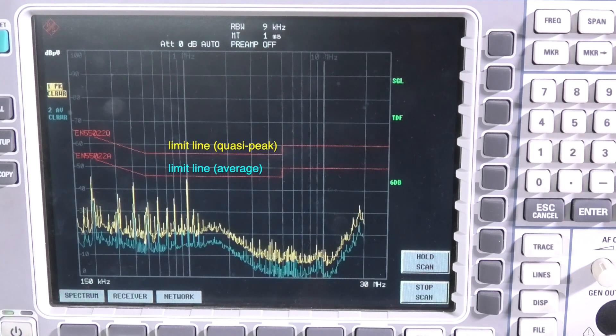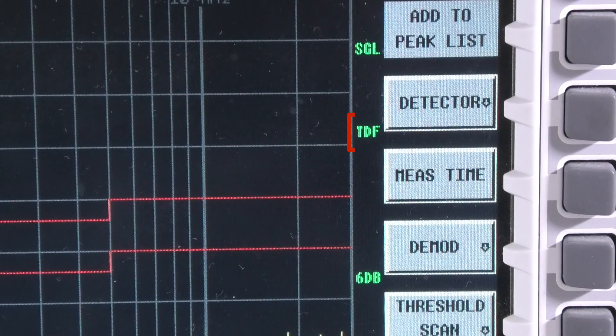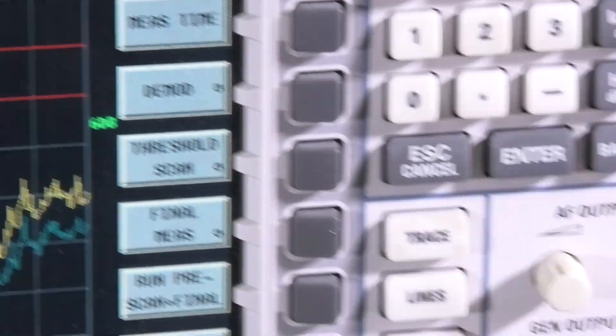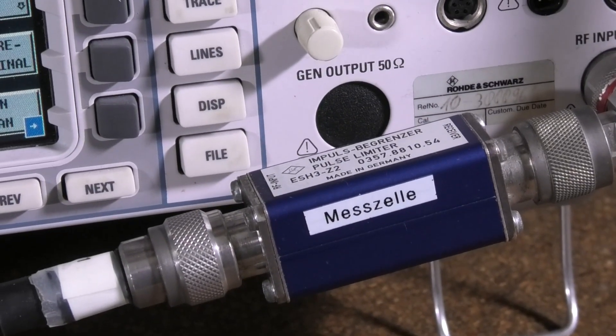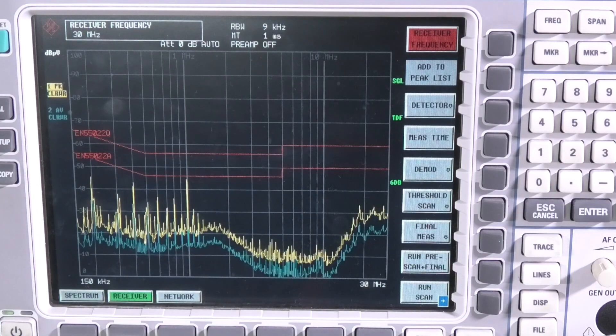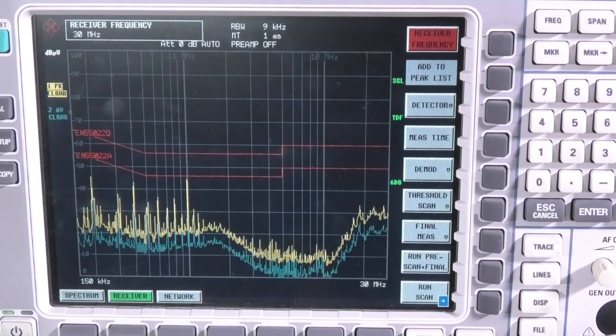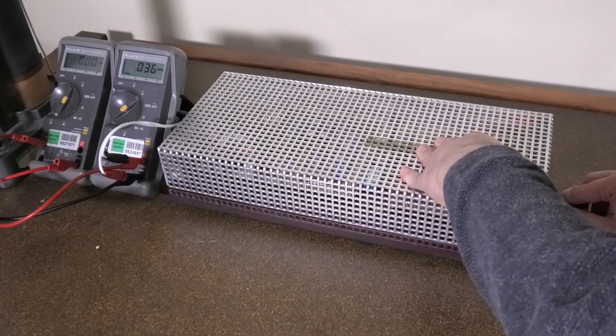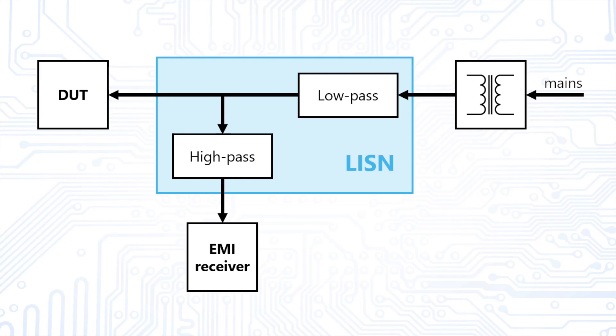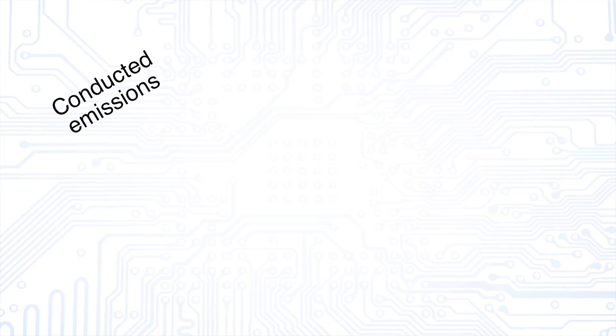By the way, all the terms you see here will be clarified in future videos. For example, a transducer factor TDF has been set here. This corrects the result, as the connected pulse limiter attenuates the measured signal by 10 decibels. Without the pulse limiter, our receiver could take serious damage when we turn on our DUT because of rapid current transients. Keep in mind that the measurement shown covers only one aspect of EMC measurements: conducted emissions.